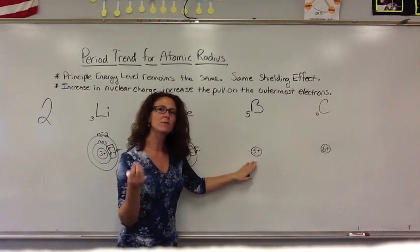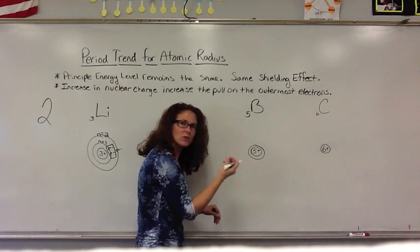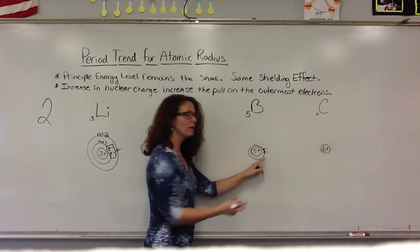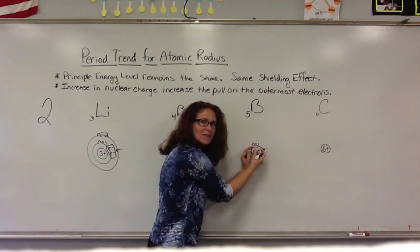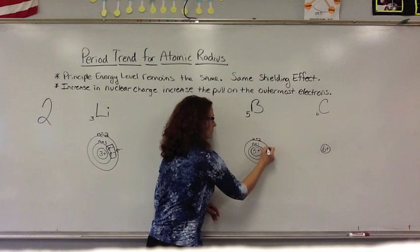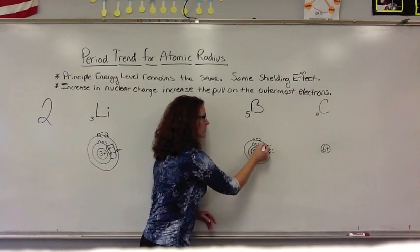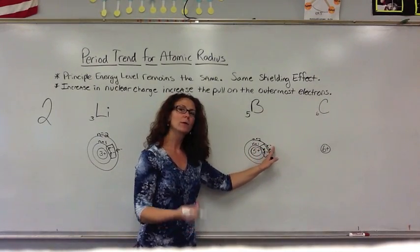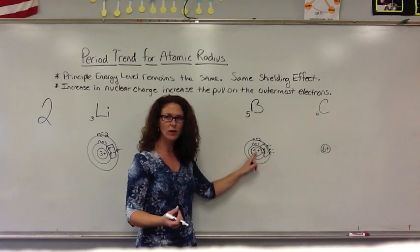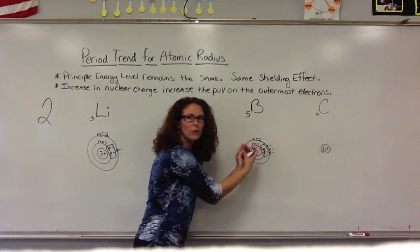Moving over to Boron, which has five protons in the nucleus. The first two electrons are not being repelled by anybody between the nucleus and where they're located, so the first energy level is really pulled in nice and tight to the nucleus. The second energy level has three electrons in it. You have the same two electrons shielding the outermost electrons, but now we have five positive charges pulling in those outer electrons. The greater the nuclear charge, the more pull it has on those outermost electrons, pulling the whole boundary in closer to the nucleus.